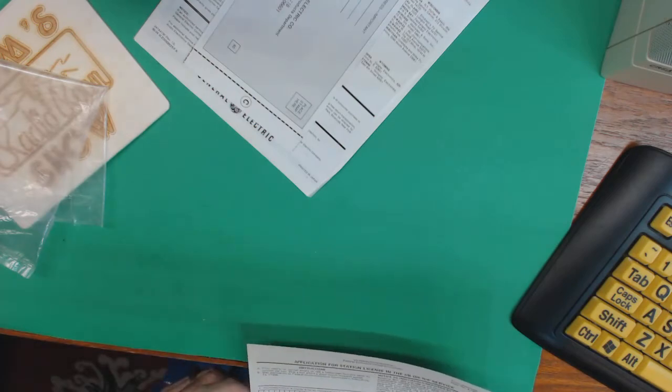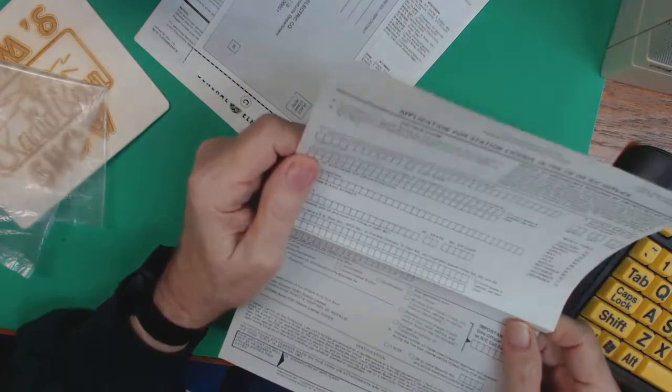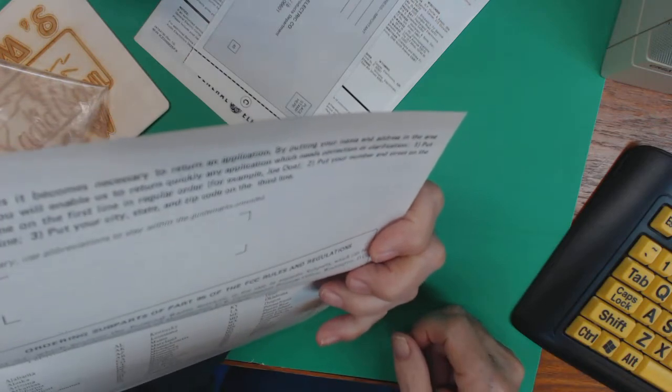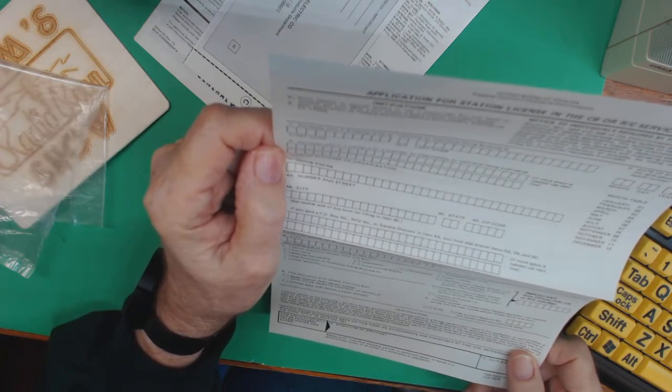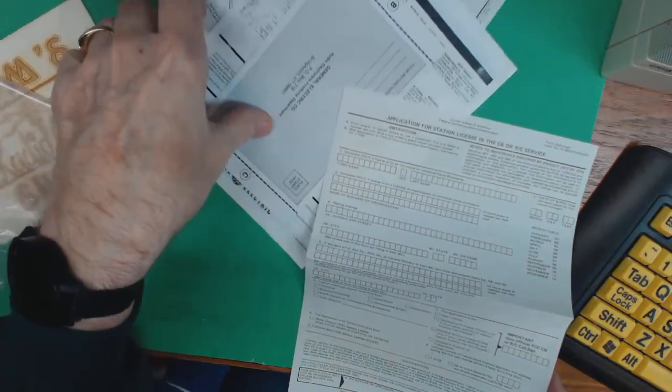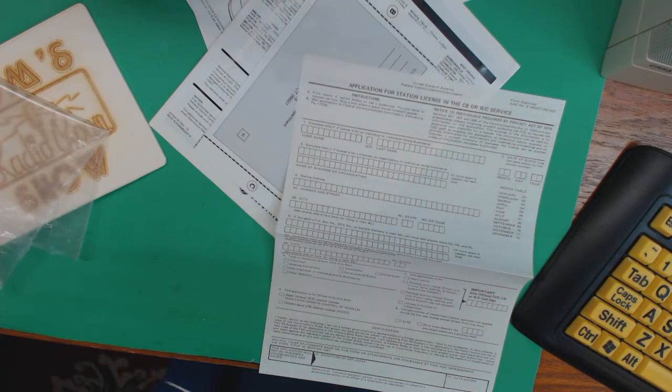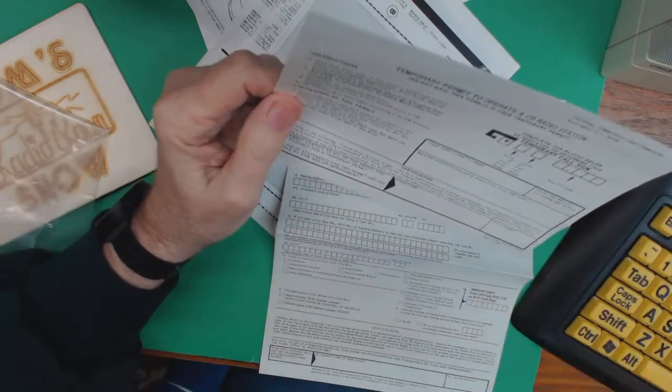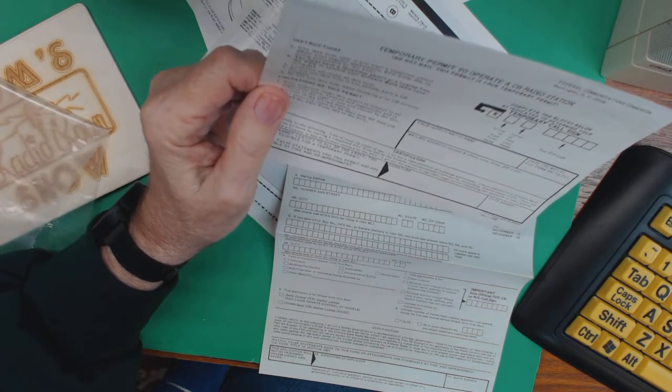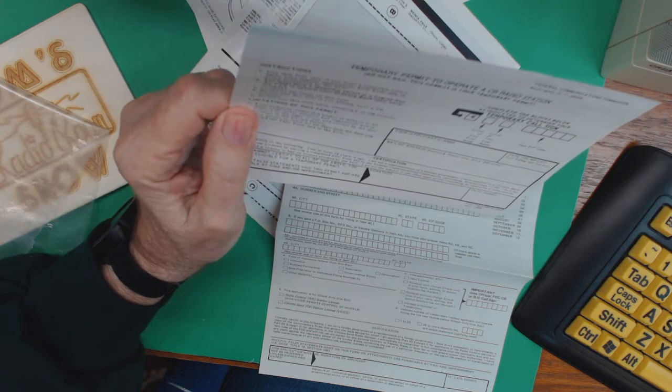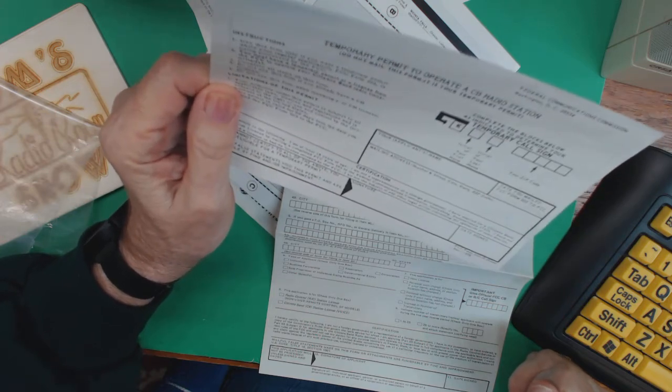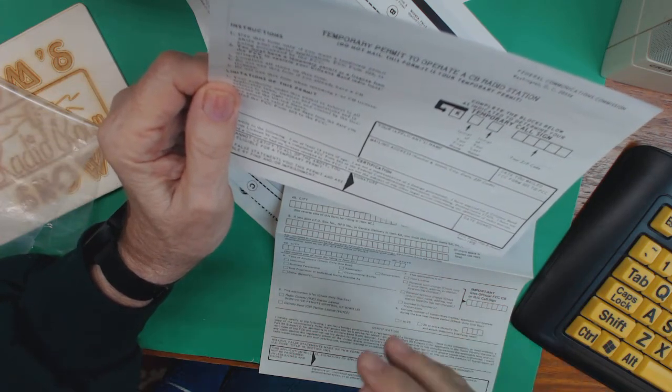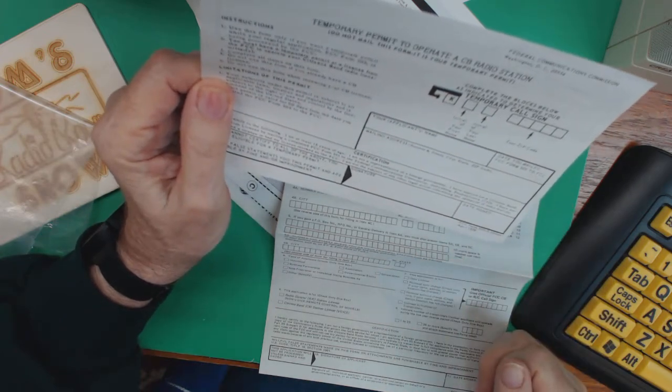And finally, this is another application for your license. Application for station license in CB Radio Service. Now, how is that different from this one over here? I'm not sure. This is just a half a page. Oh, this is, I think, something that you fill out, you make up a temporary call sign, and you post this that you're on the air and you have applied for your license, and you sign this.